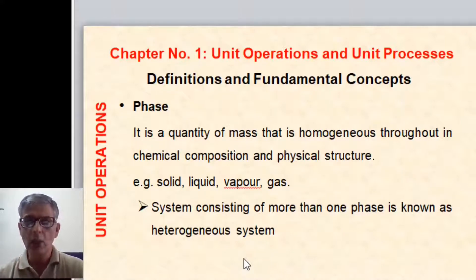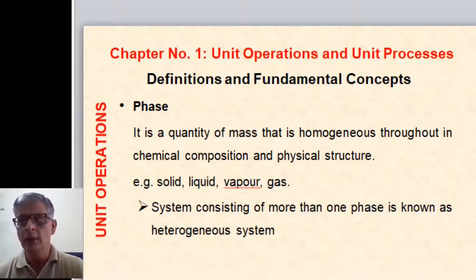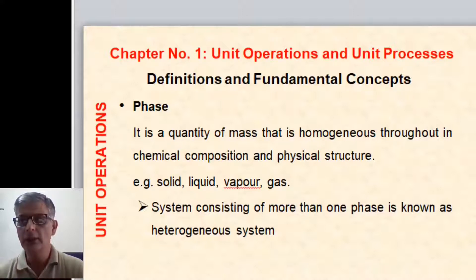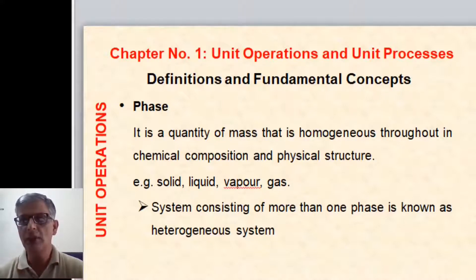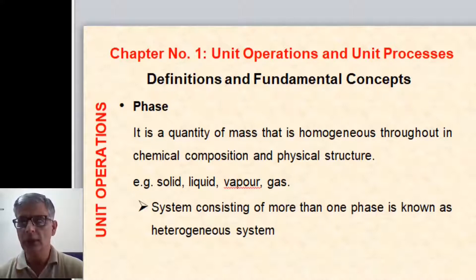Next is phase: it is the quantity of mass that is homogeneous throughout in chemical composition and physical structure. For example, solid, liquid, vapor, and gas. A system consisting of more than two phases is known as heterogeneous.